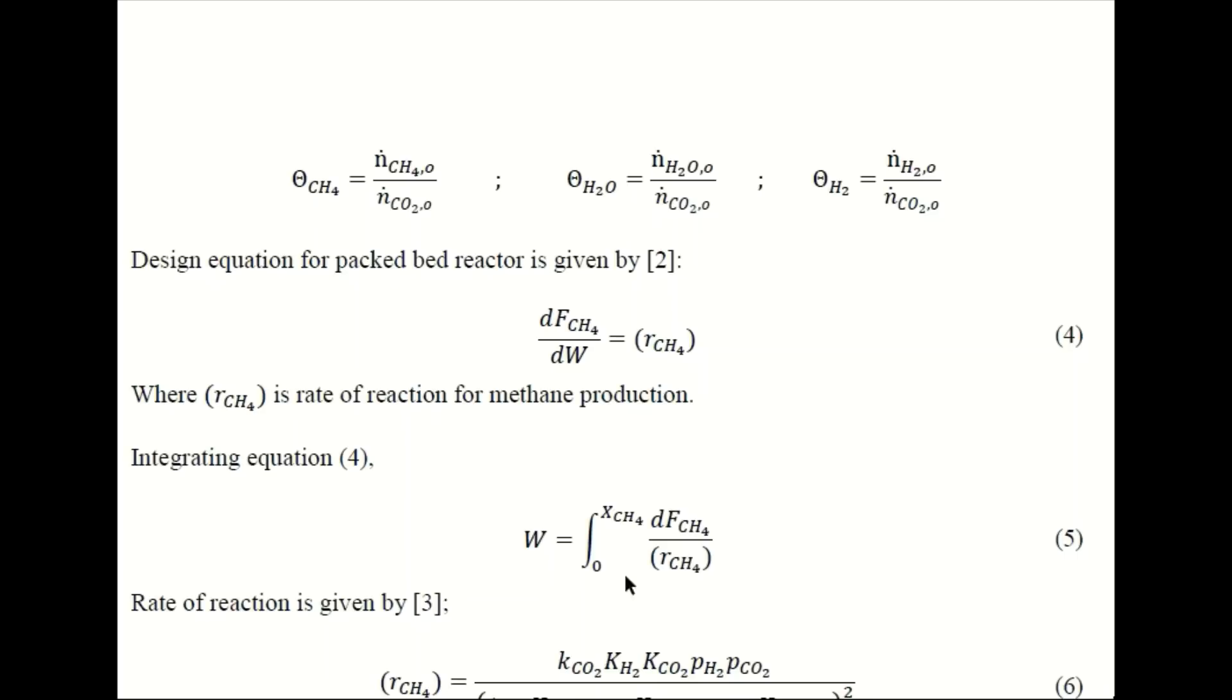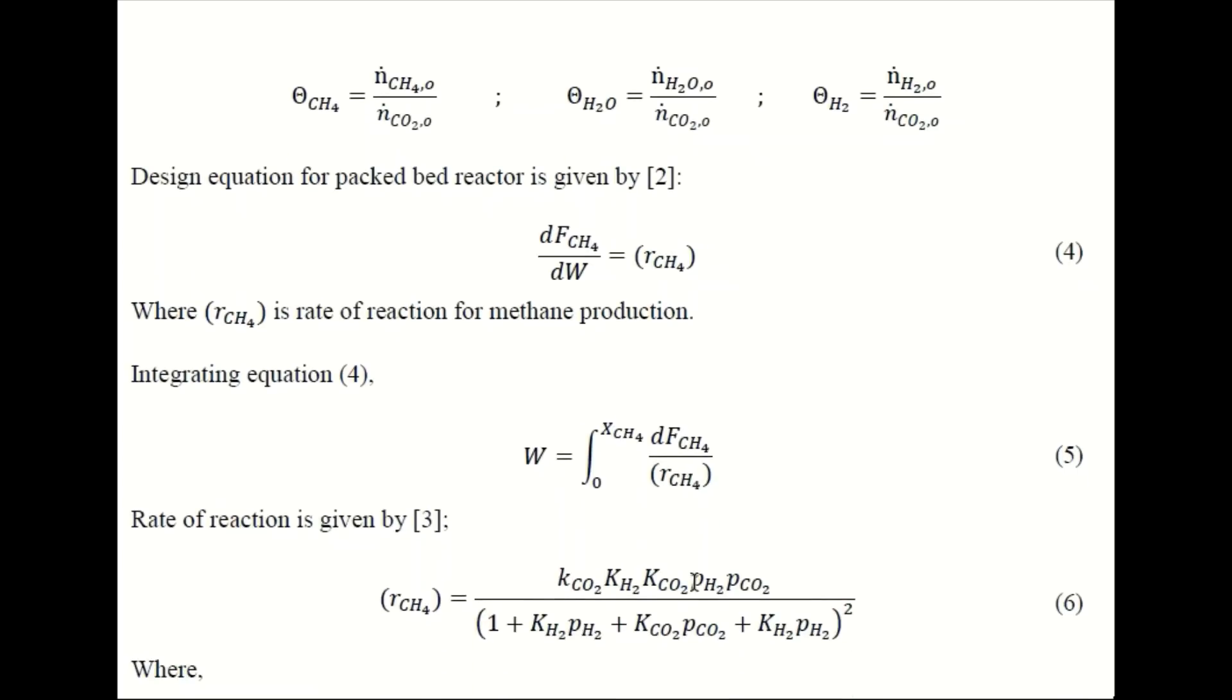So now we basically need to know about the rate of reaction which we can determine from the literature. Like for methanation, this is the rate of reaction which is basically determined experimentally. You can find it in literature or books. So once you are done with this rate of reaction, you can substitute this value here.